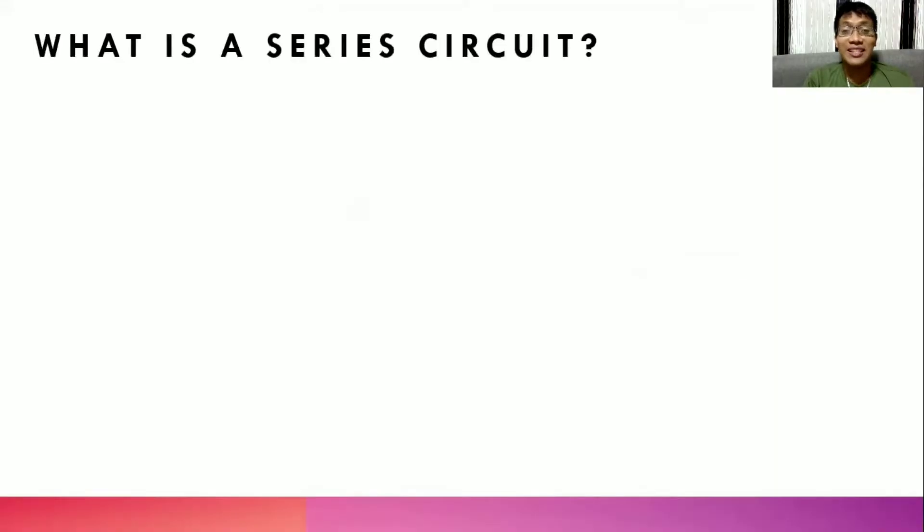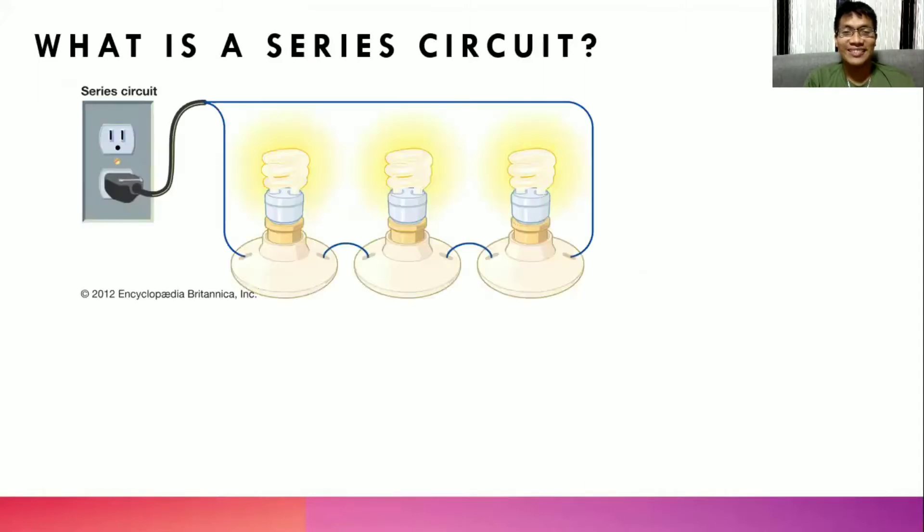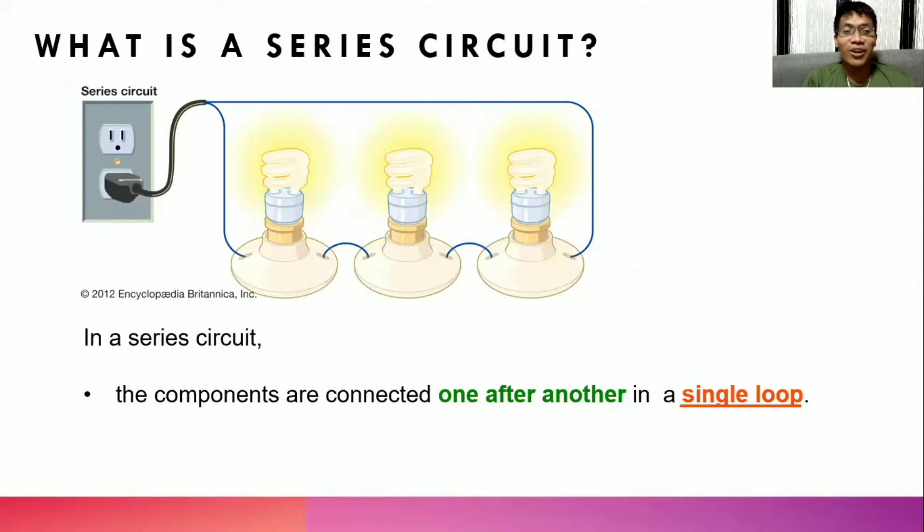What is a series circuit? It looks like this. And how do we describe it? In a series circuit, the components are connected one after another in a single loop. You have to remember that in a series circuit, it will always form a single loop.